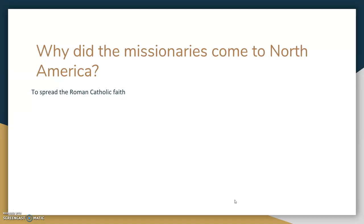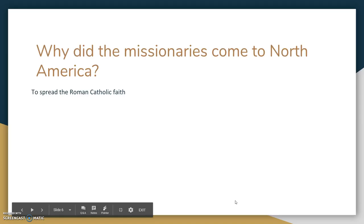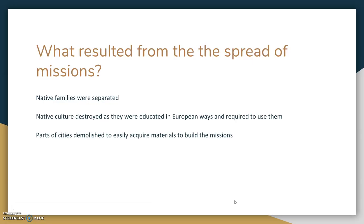Why did missionaries come to North America? With Roman Catholicism being the only state religion of Spain, they came over to spread the Roman Catholic faith and convert the natives. What resulted from the spread of missions? First, native families were separated. If a member of a native family accepted and converted to the Roman Catholic faith, that member was required to stay in the mission, while family members who did not convert were not allowed in, so families were split up.